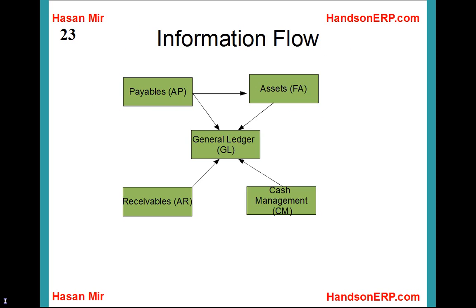Modules talk to each other — that is the key point here. Information flows from one module to another. For example, all accounting information flows from all modules into the General Ledger. Invoices flow from Accounts Payable into Fixed Assets, so assets are automatically created. Although they are standalone software, the difference is that they talk to each other, which is why companies implement a whole ERP across all of their departments.